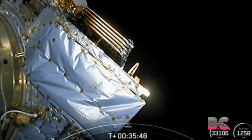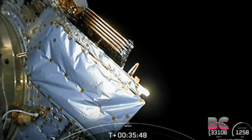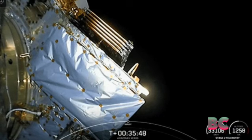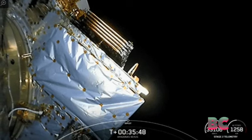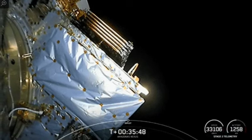This was the booster's sixth flight, having previously delivered the SES-22 satellite, ispace's HAKUTO-R lunar lander, and three batches of the company's Starlink satellites.